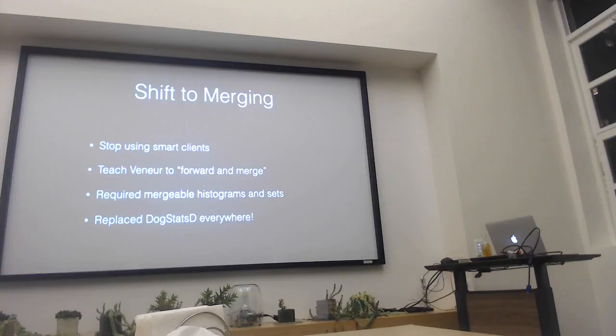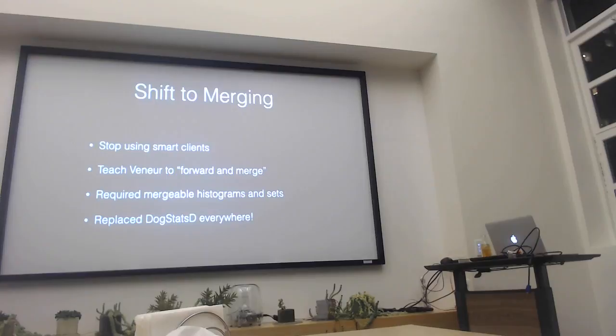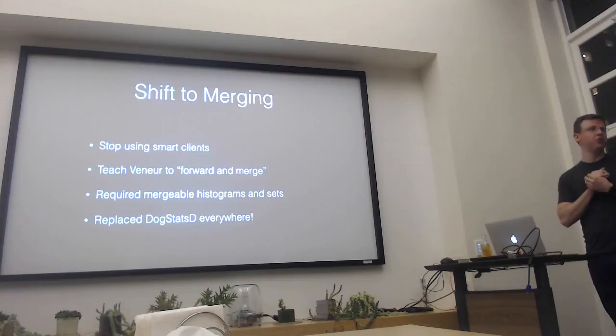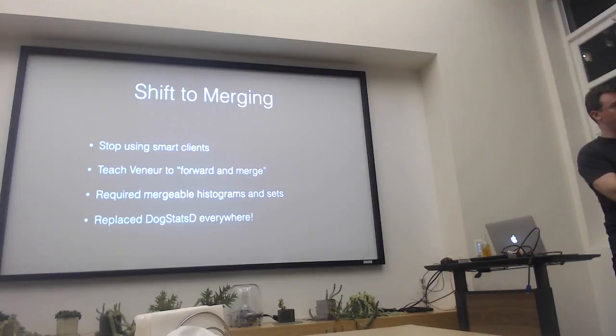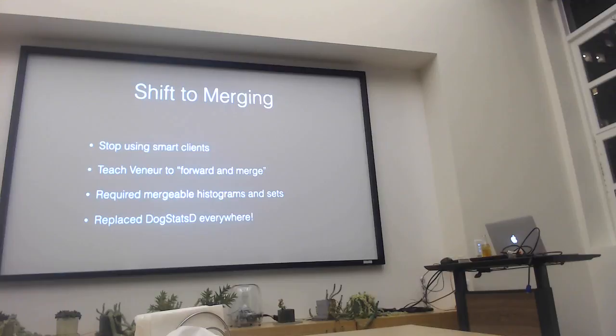Veneur then shifted at this point. We've basically reproduced the StatsD world — we've got the centralized Veneur instance and we've got all these local DogStatsD agents shipping their metrics to Datadog themselves. But the smart client thing was not working well for us. What we wanted to do was adjust Veneur itself to forward and merge. We wanted the local machine to receive its metrics, and then it should make the routing decision — it should become the smart client. But this is tricky, because then we needed to also make our histograms mergeable.